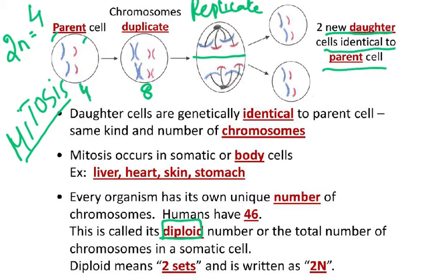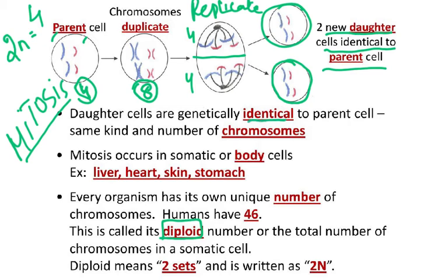If the chromosome number was four, it must double — this is called DNA replication, where exact copies of chromosomes are made. The chromosomes then line up at the equator, separate, four going to each side, forming two daughter cells. These daughter cells are genetically identical because they have the same kind and number of chromosomes as the parent cell.